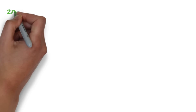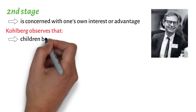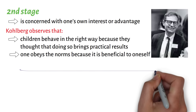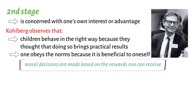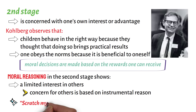The second stage is concerned with one's own interest or advantage. Kohlberg observes that children behave in the right way because they think that doing so brings practical results. Hence, one obeys the norms because it is beneficial to oneself, and moral decisions are made based on the rewards one can receive. Moral reasoning in the second stage shows a limited interest in others, and concern for others is based on instrumental reason — for example, the 'scratch my back and I'll scratch yours' mentality — rather than on loyalty or intrinsic respect.